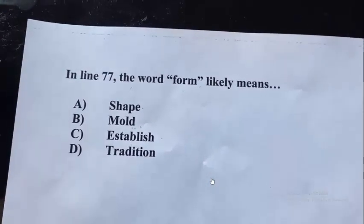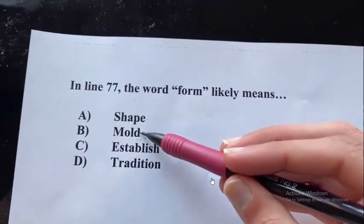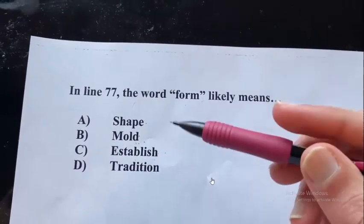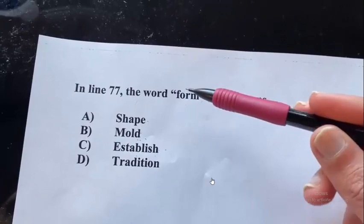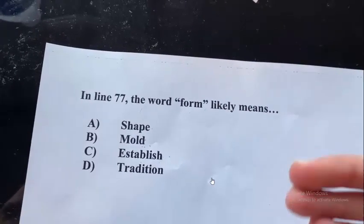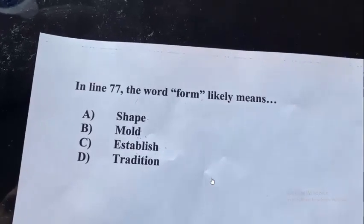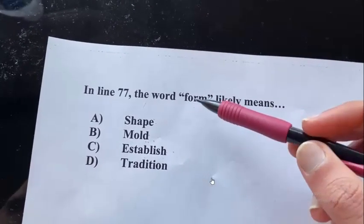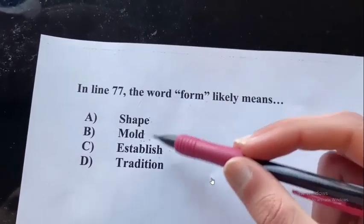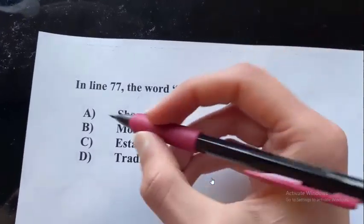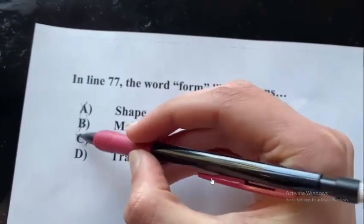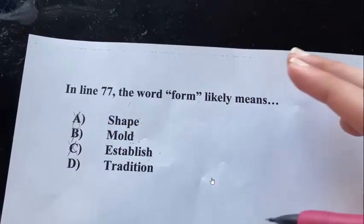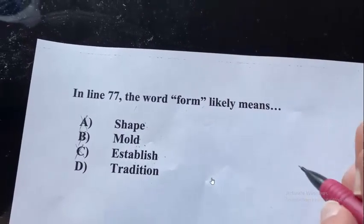You'll notice that the first three answers — shape, mold, and establish — are all primary definitions for the word 'form.' These are common definitions: when you're forming something, you're creating or molding something; when you form a relationship, you're establishing one; and the form of a bicycle or tree is its shape. So those are all common definitions of form, and you can cross each of them out.